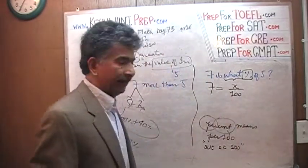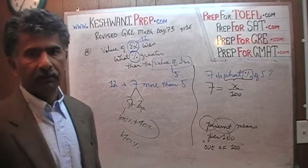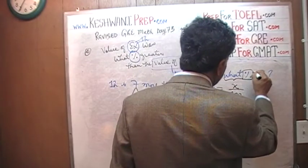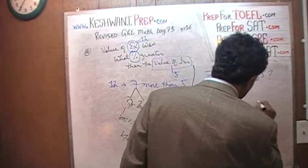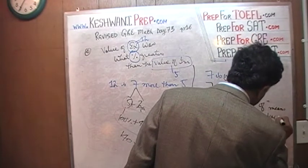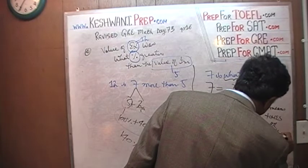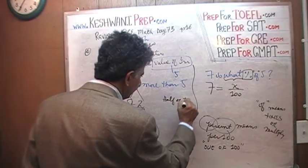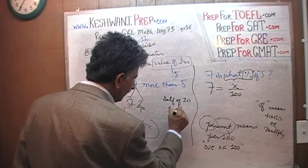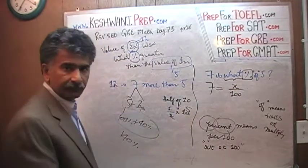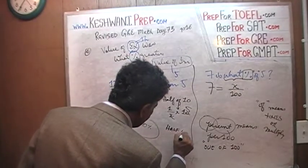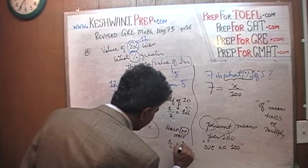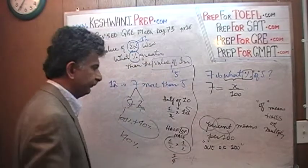So 'what percent' becomes x over 100. Now, what does 'of' mean? 'Of' means times, or multiply. For example, half of 10 means half times 10, which equals 5. Half of half means half times half, which equals one quarter. So 'of' always means multiplication.